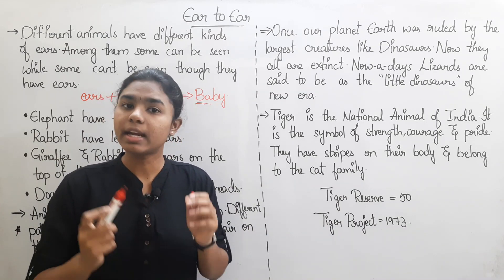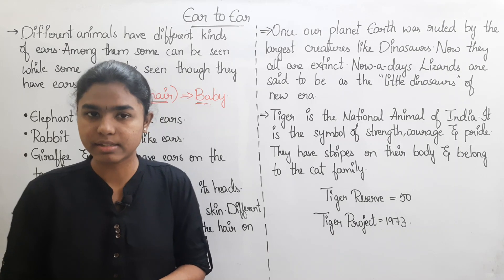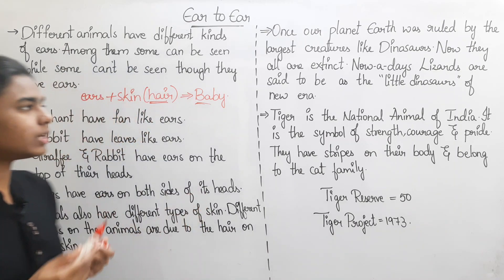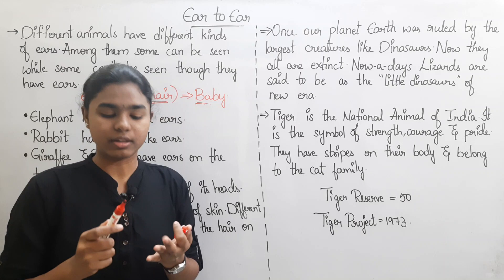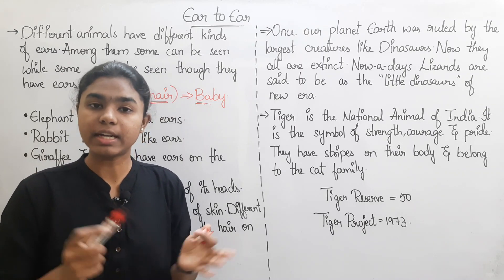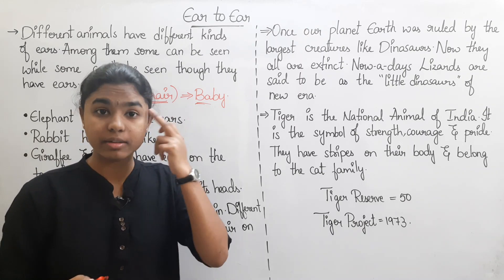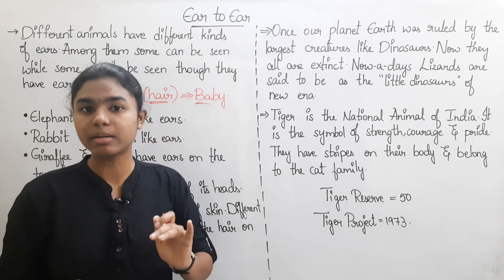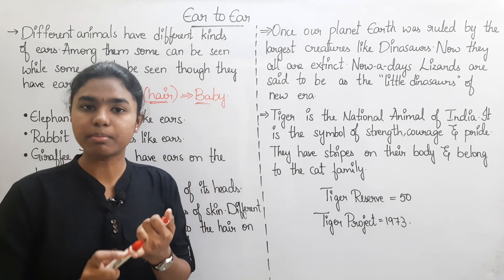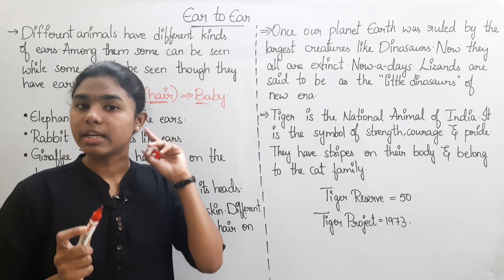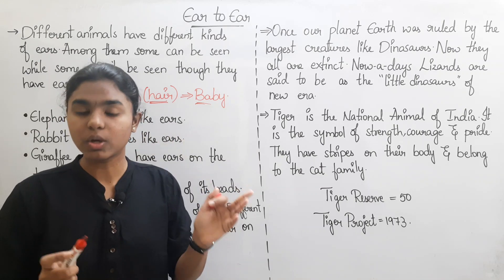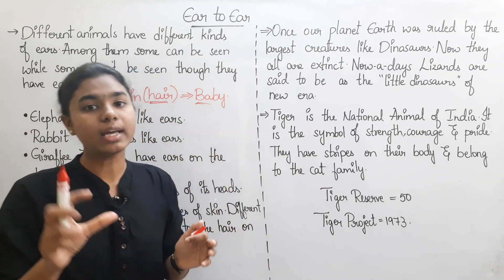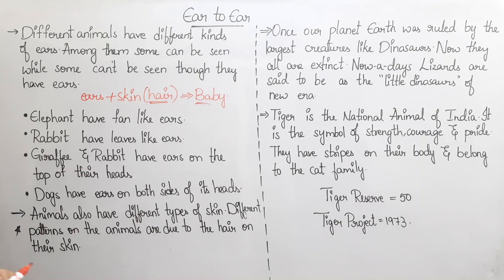Human beings also give birth directly to babies. Few more examples are lizards. There are birds — if they have skin and hair, they have external ears. All animals also have eggs.